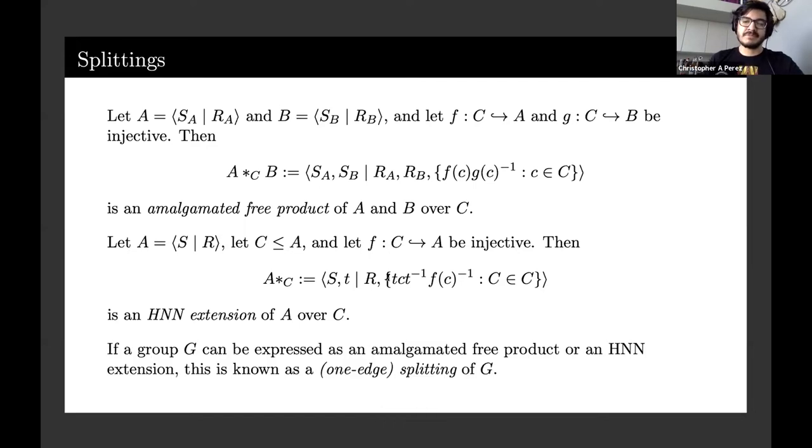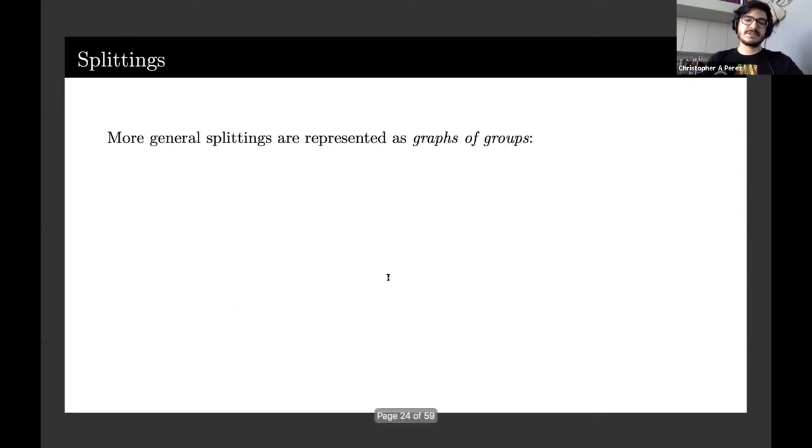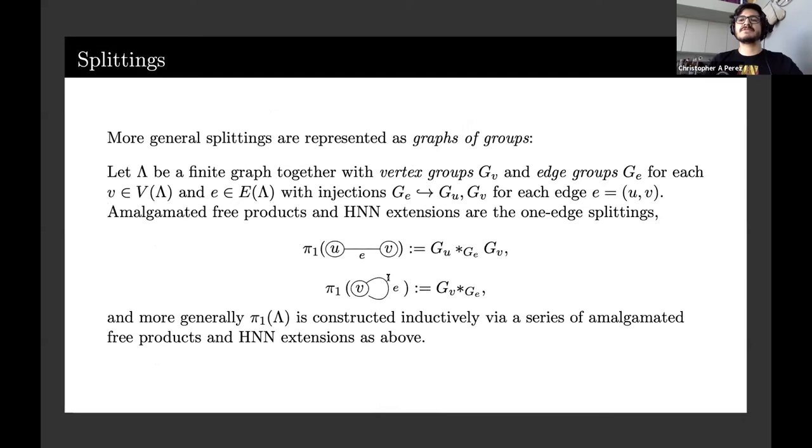If a group can be expressed as an amalgamated free product or an HNN extension, this is known as a one edge splitting. More generally, splittings are represented in terms of graphs of groups. If we have a finite graph and assign a group to each vertex and each edge so that the edge groups inject into the endpoint groups, we can construct a graph of groups decomposition. For example, if I have a one edge graph u and v joined by e, the fundamental group of this graph of groups would be the u vertex group amalgamated with the v vertex group over G_e.